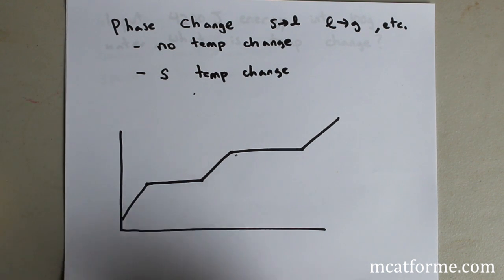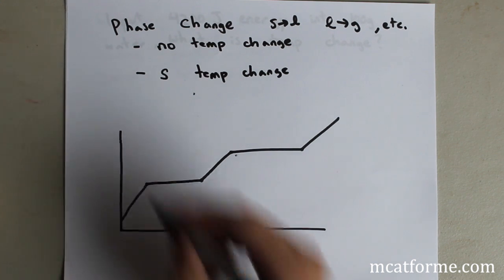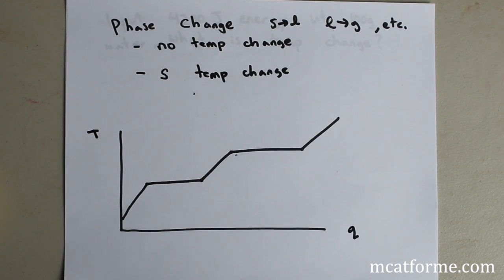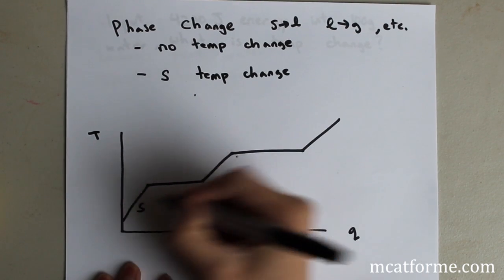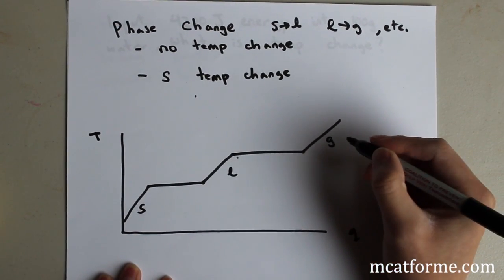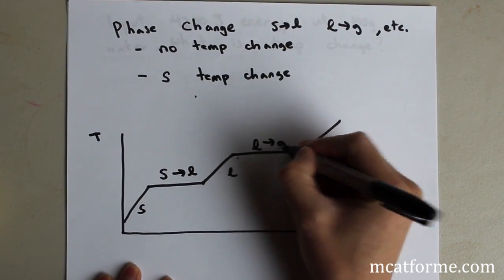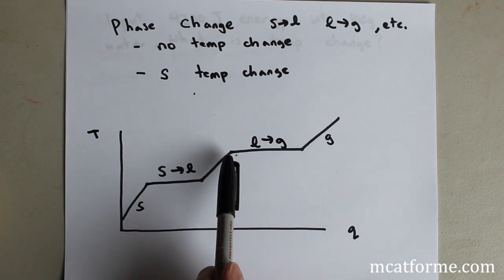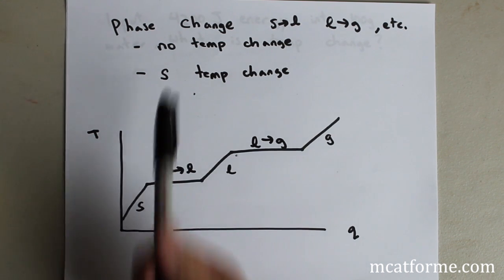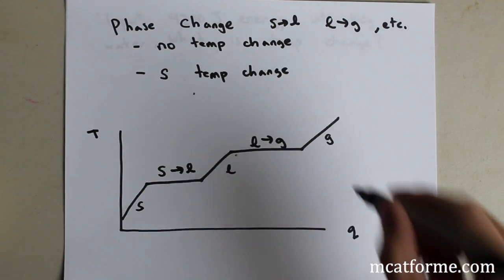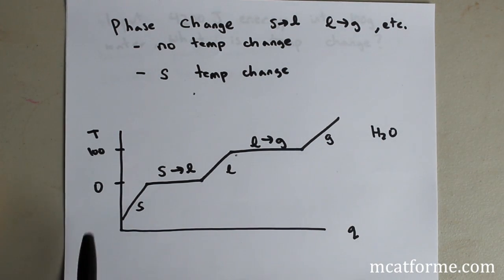This is a phase change graph showing temperature versus the amount of heat Q entered. This shows solid, liquid, and gas regions, and these steady horizontal flat points are our phase changes. When we convert from solid to liquid, we have no temperature change. When we convert from liquid to gas, we have no temperature change. If we assume this phase diagram is specifically for water, we know the melting point is 0 degrees Celsius and the boiling point is 100 degrees Celsius.